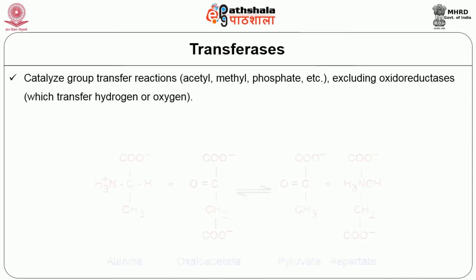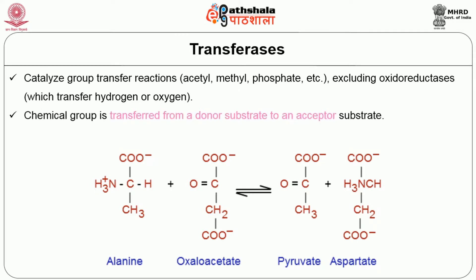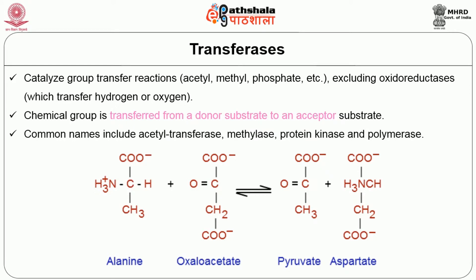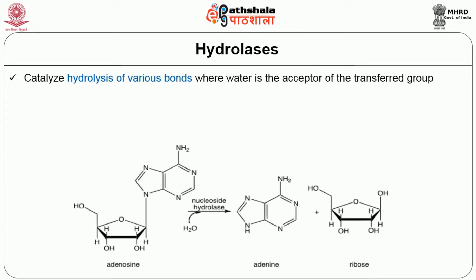Transferases, the second group, catalyze group transfer reactions. The transferring group could be an acetyl molecule, a methyl group, a phosphate group, or others — excluding hydrogen or oxygen, which are transferred by oxidoreductases. The chemical group is transferred from one donor substrate to an acceptor substrate. Common examples include acetyltransferases, methylases, protein kinases (involved in phosphate transfer from ATP), and polymerases.